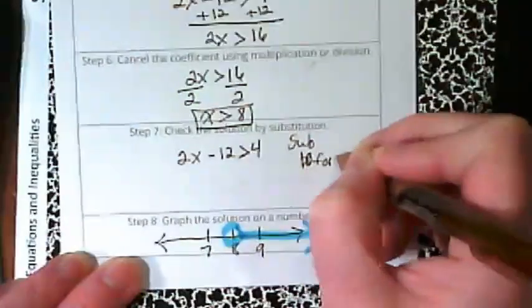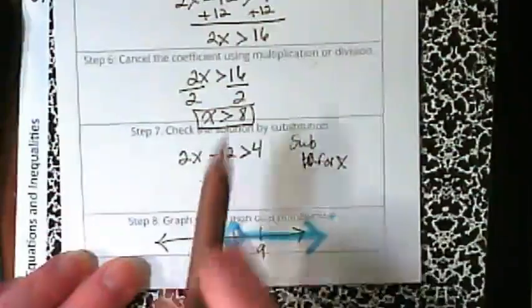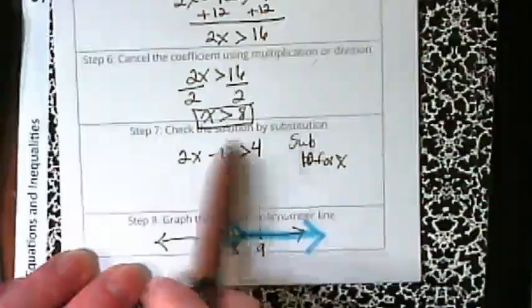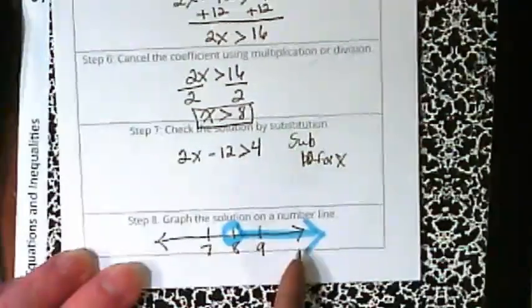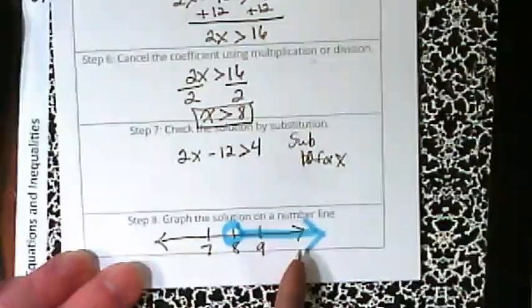10 for x because it's greater than 8. Are you all seeing what I'm doing there? I just picked a number off the number line. Why did I pick 10? Because 10 is easy to work with.